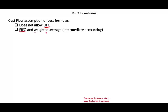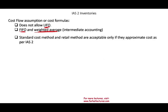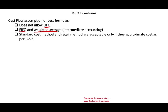Which methods are accepted under IFRS? FIFO (first in, first out) and weighted average are accepted. If you don't know how FIFO or weighted average work, go to my intermediate accounting course — chapters eight and nine cover inventory in depth. Standard cost method and retail method are also acceptable under IAS 2, but only if they approximate cost. The retail method you learn in intermediate accounting and standard costing in managerial accounting.